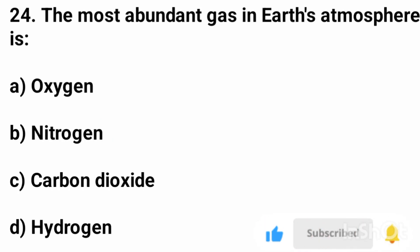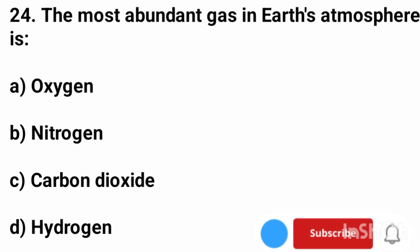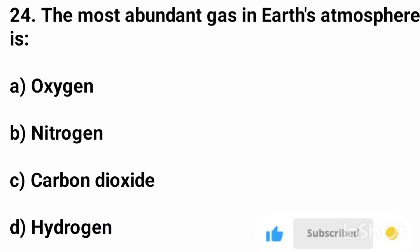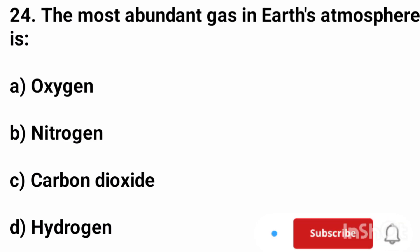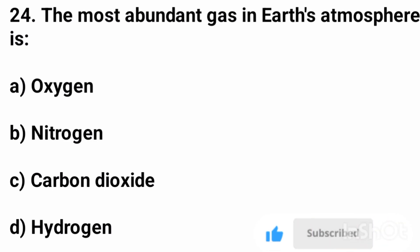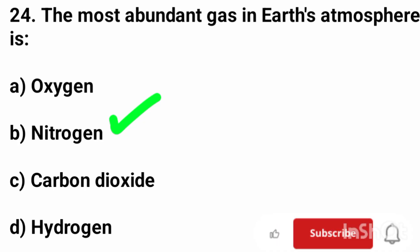Question number 24. The most abundant gas in earth's atmosphere is? The correct answer is option B, nitrogen.